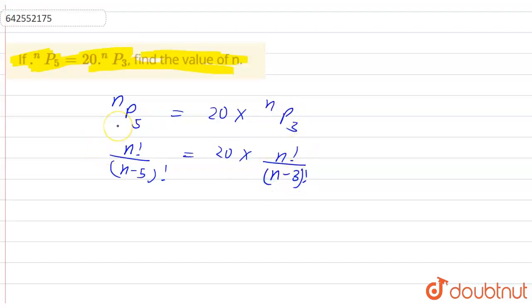moving next, if I do the cross multiplication, then it will come N factorial into N minus 3 factorial divided by N minus 5 factorial into N factorial.